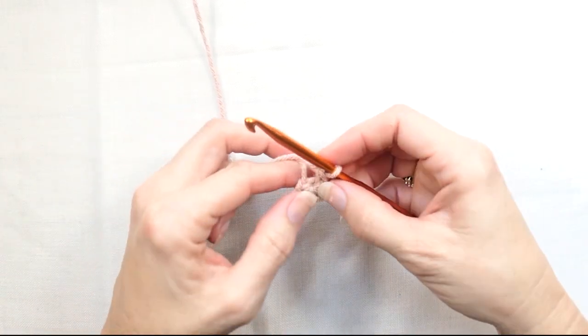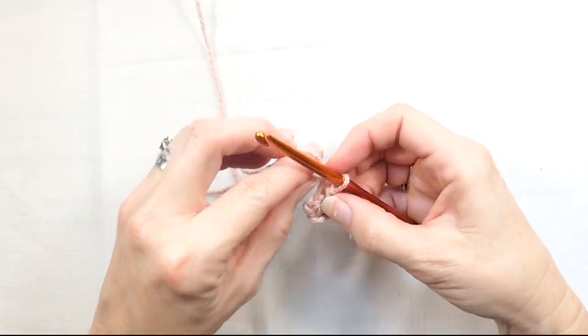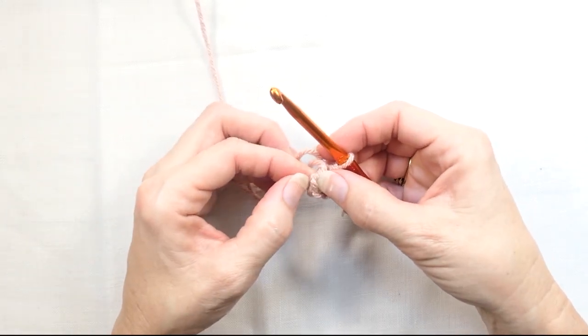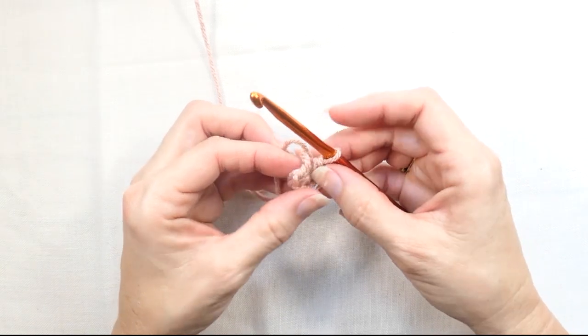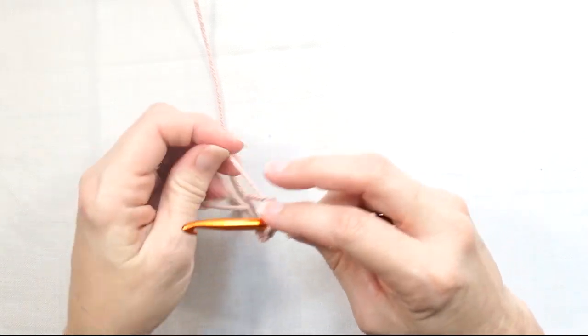And then you go back and you can either work in your pattern. Some patterns will have you start working straight into the first stitch that you made. Or some will have you just join that first stitch that you made and then chain 1 and go up from there.